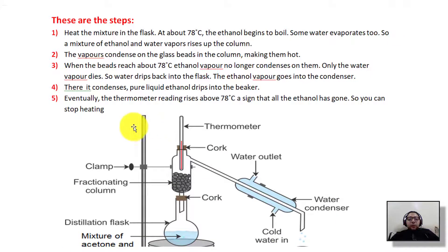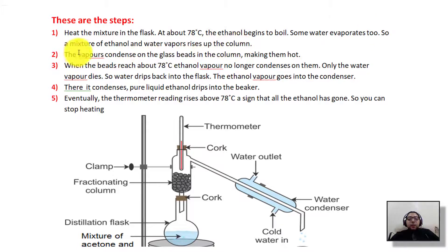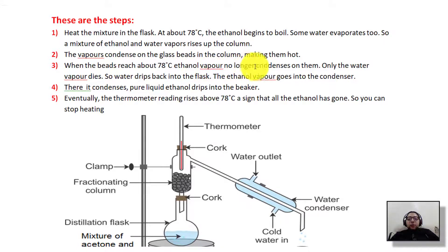Let's go through the steps together. When we heat the mixture in the flask to about 78°C, the ethanol begins to boil. Some water evaporates too, so a mixture of ethanol and water vapor rises up the column. The vapor condenses on the glass beads in the column, making them hot. When the beads reach about 78°C, ethanol vapor no longer condenses on them — only water vapor condenses.